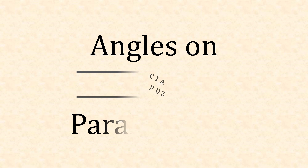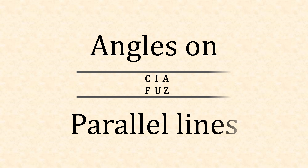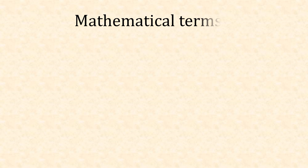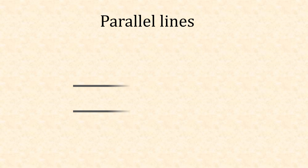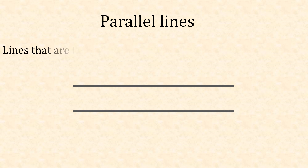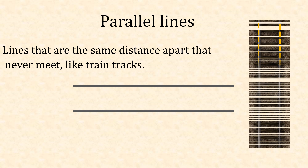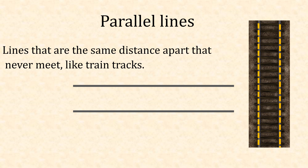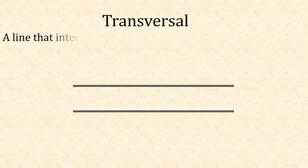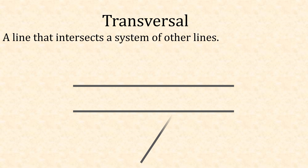In mathematical terms, we're going to look at parallel lines. This is when two lines are the same distance apart and never meet — a bit like train tracks. Then we have a transversal line, which is when a line intersects a system of other lines.